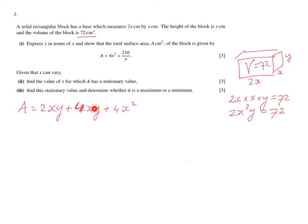So that is the surface area in terms of x and y. But we have to show that the surface area can be simplified into 4x squared plus 216 over x. The 'show that' question basically means that is the answer — it's the answer key, and we have to do the working to arrive at that particular result.